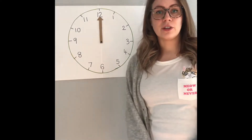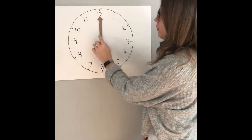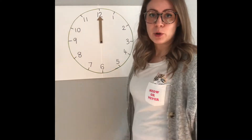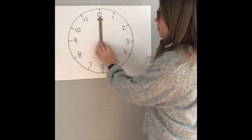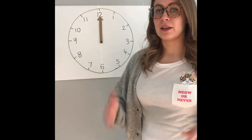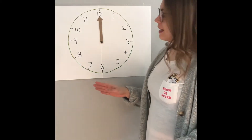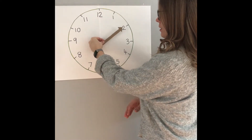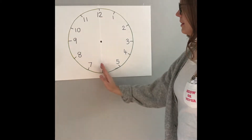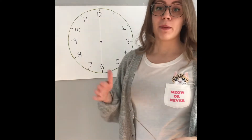As you know, in an hour there are 60 minutes. Hopefully by now you will recognise that when the minute hand is pointing to the 12 — so when it's right up facing up at the top — that is o'clock. At the moment it's no minutes past the hour; it's bang on the hour.